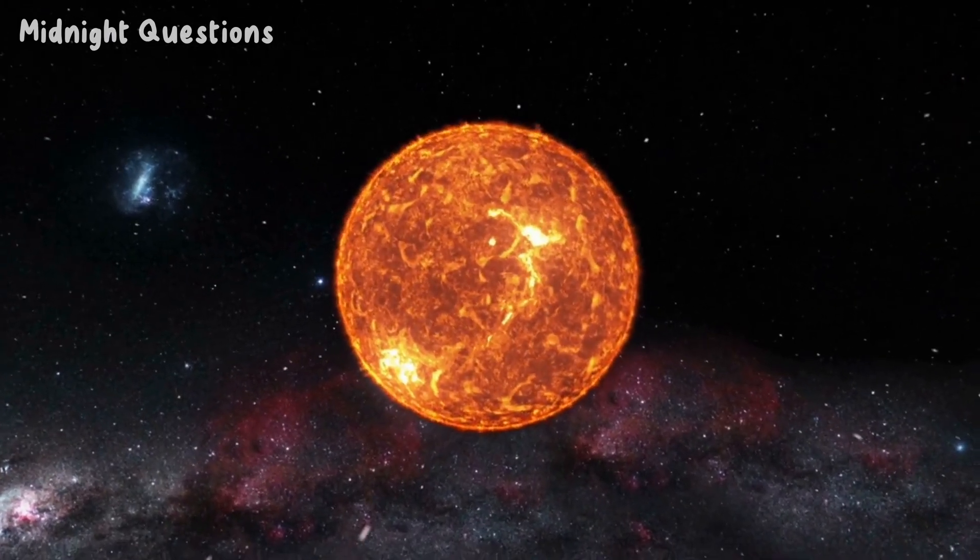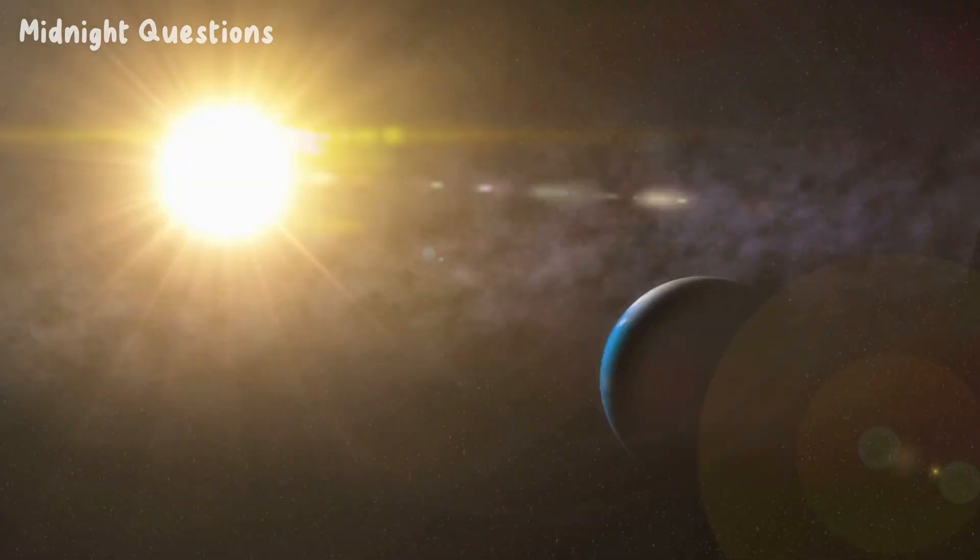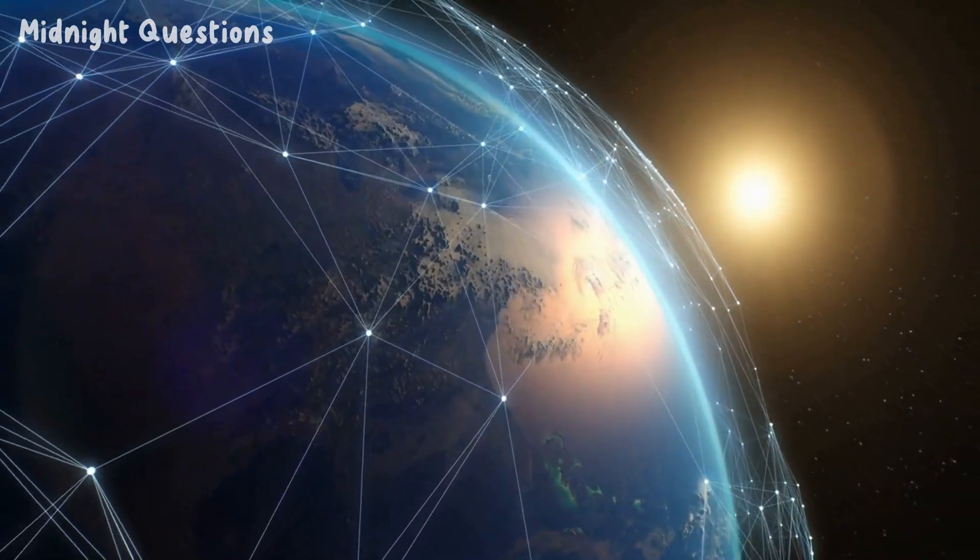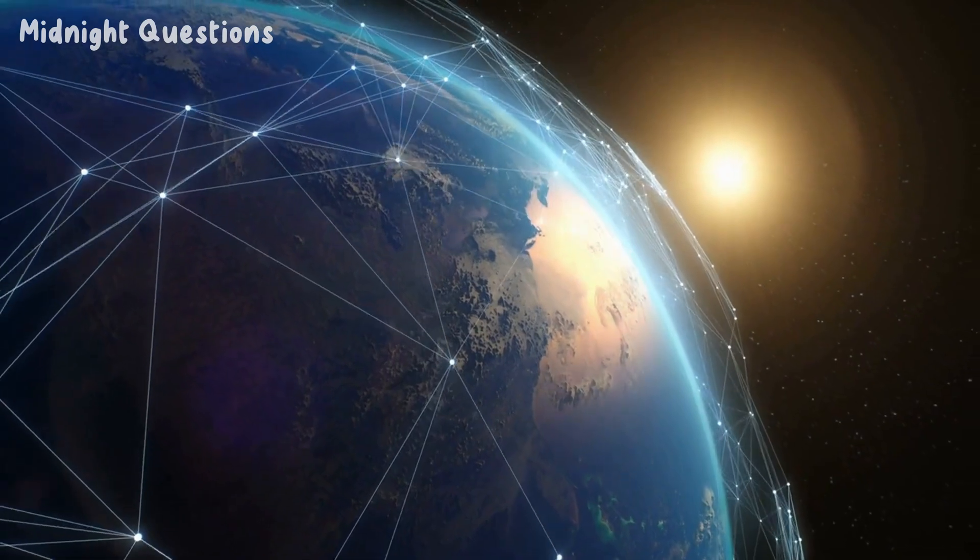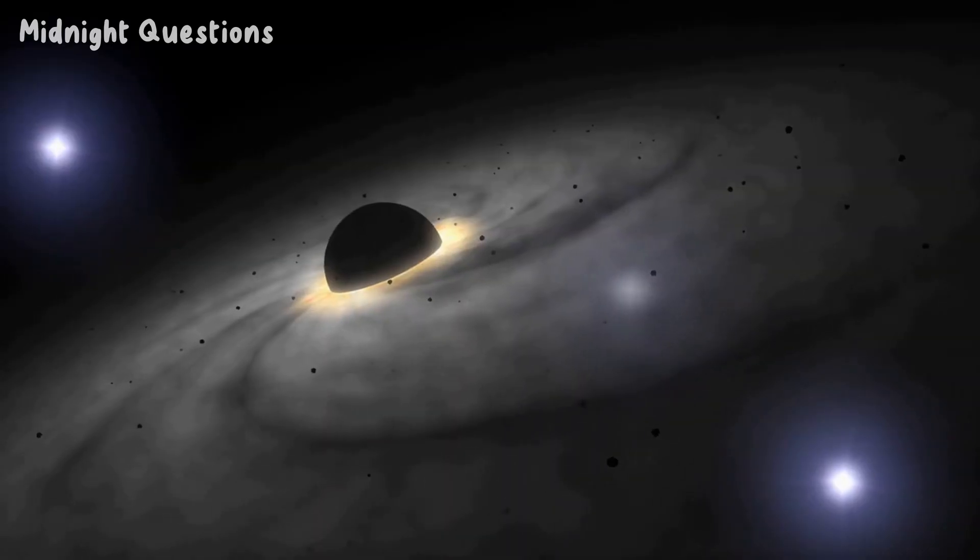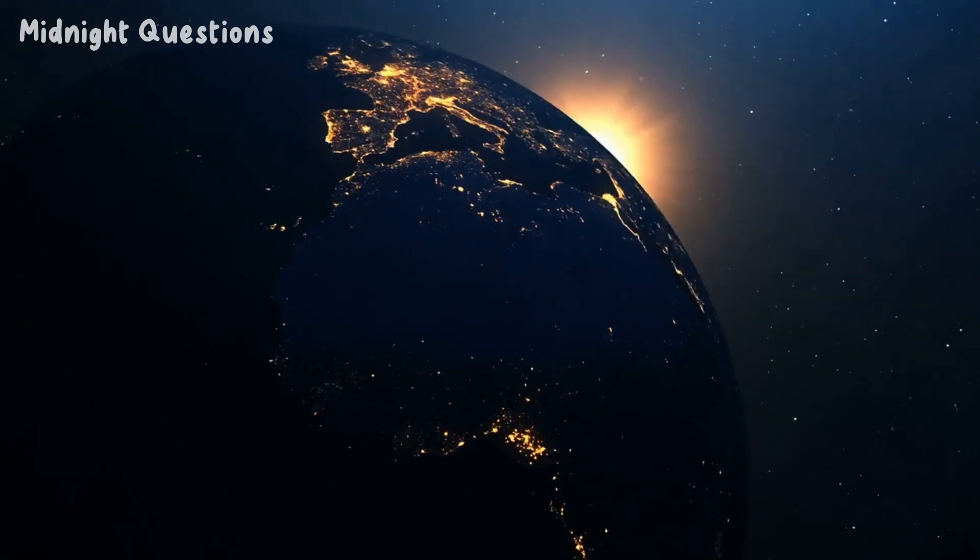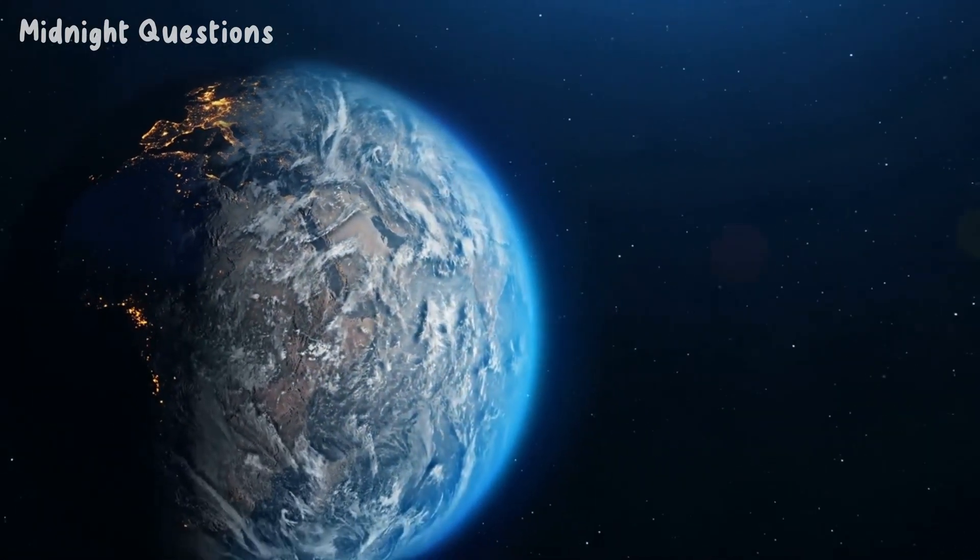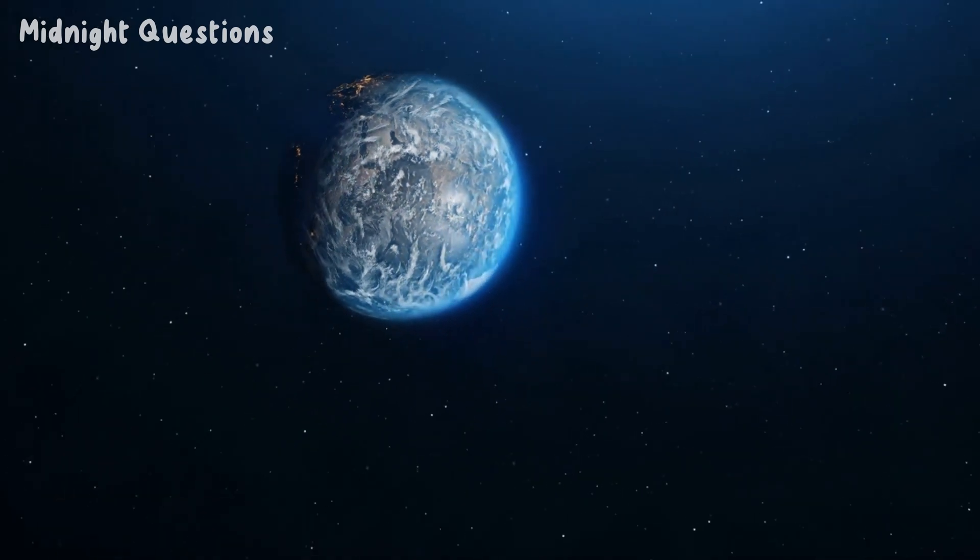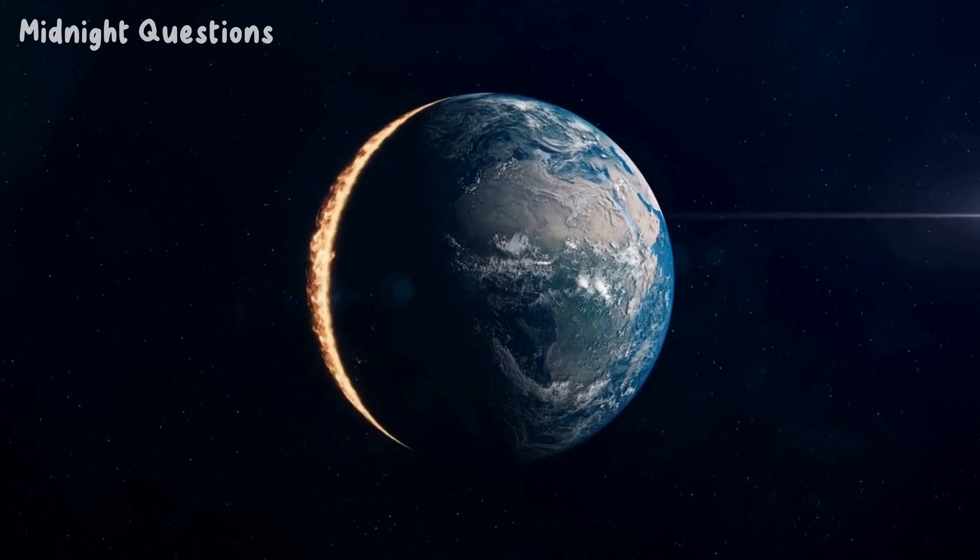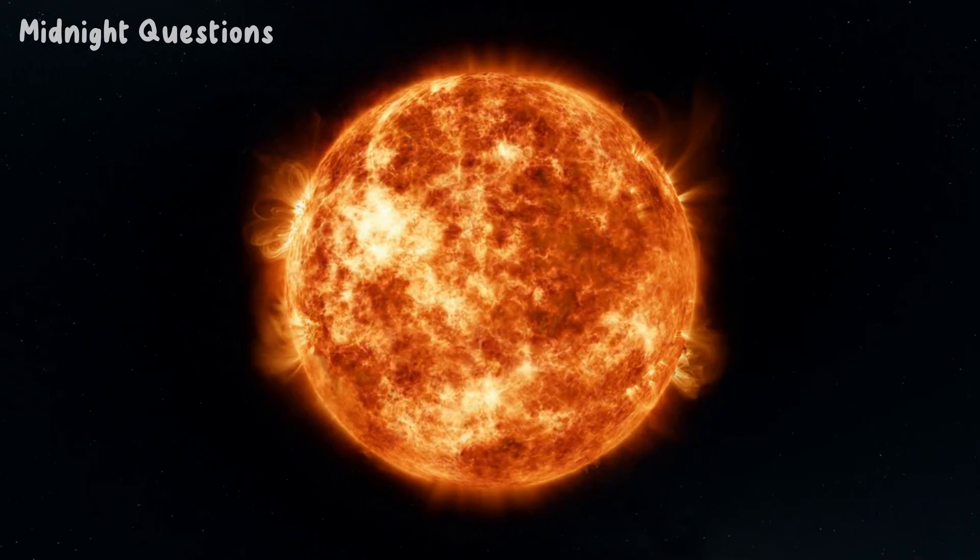But why doesn't the Sun experience the same process of convection? The answer lies in the fact that the Sun is made up of mostly gas, while the Earth is solid. The gases in the Sun's interior are constantly moving and mixing, which prevents the formation of convection currents. In addition, the Sun's strong magnetic field suppresses the formation of convection currents. In contrast, the Earth's solid interior allows for the formation of convection currents, which help to transport heat from the core to the surface. This is why the Earth's core is hotter than the Sun.